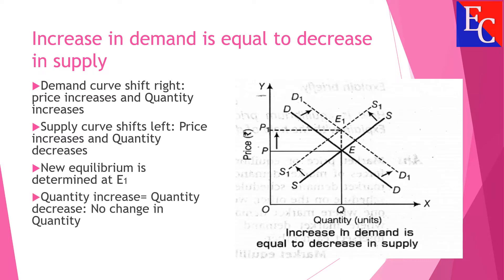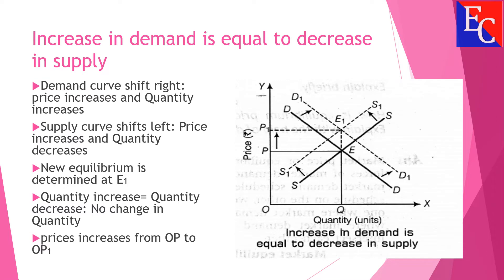In this case, the quantity increase is equal to the quantity decrease, so there is no change in quantity. Price increases from OP to OP1.